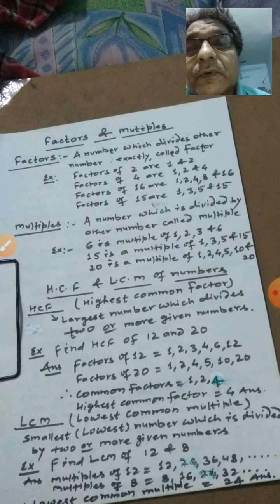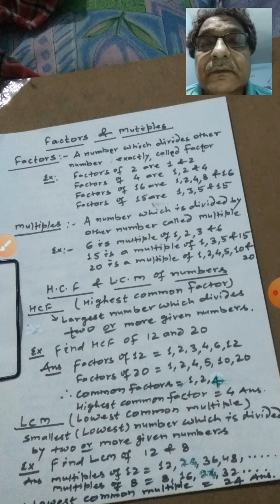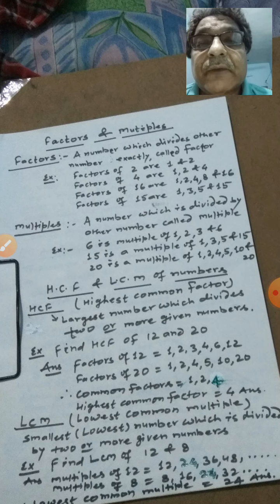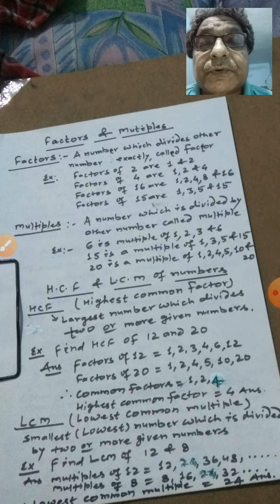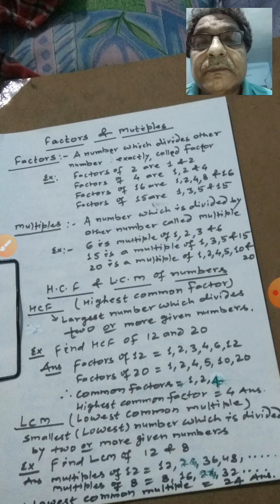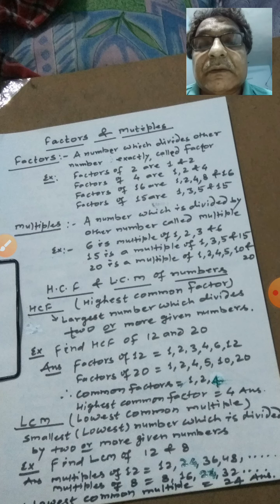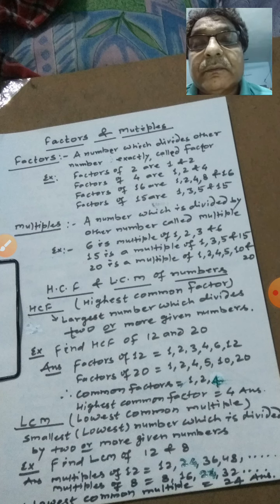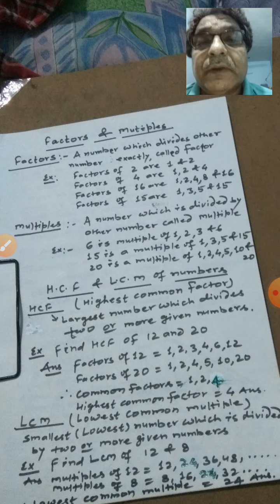The factors of 16 are 1, 2, 4. And for another example, the factors of 15 are 1, 3, 5, and 15. This means a factor is the number by which another number can be exactly divided.